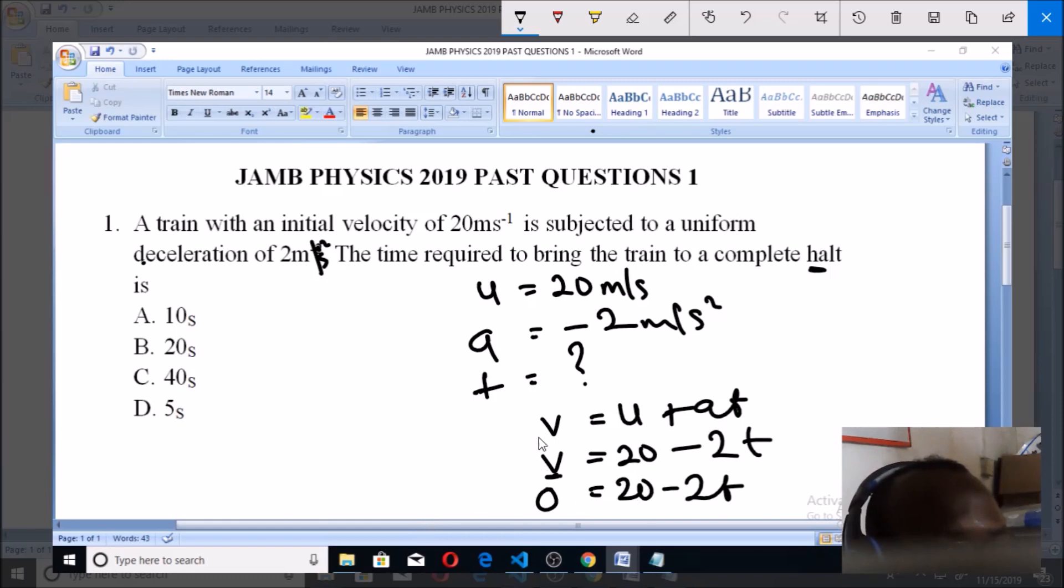So take 20 to the other side. You will now have minus 20, because the 20 is crossing over to here, equals minus 2t. So minus cancels minus, and t equals 20 over 2, which is equal to 10. So that makes option A the right answer. 10 is the answer.